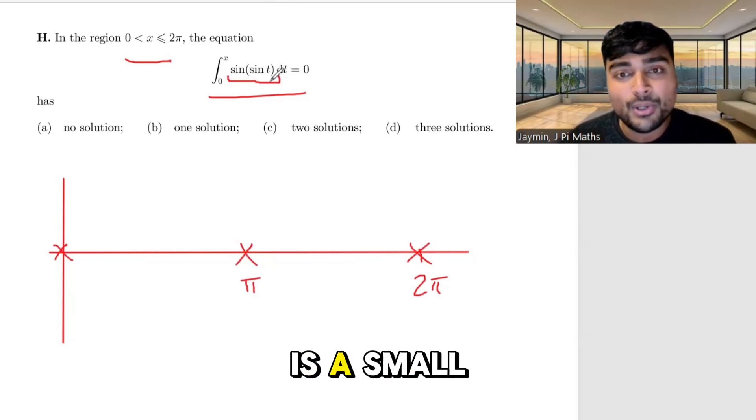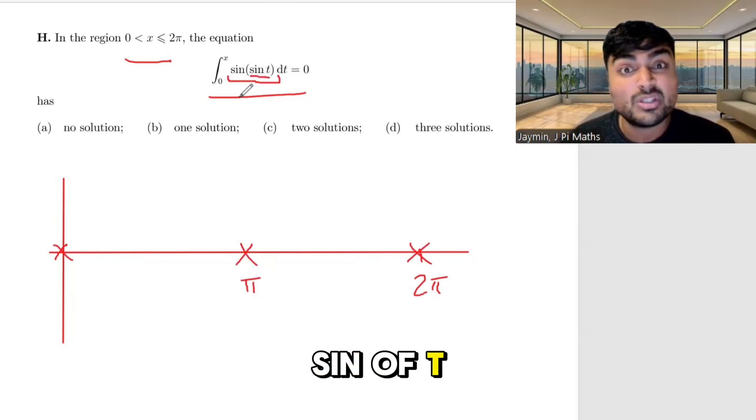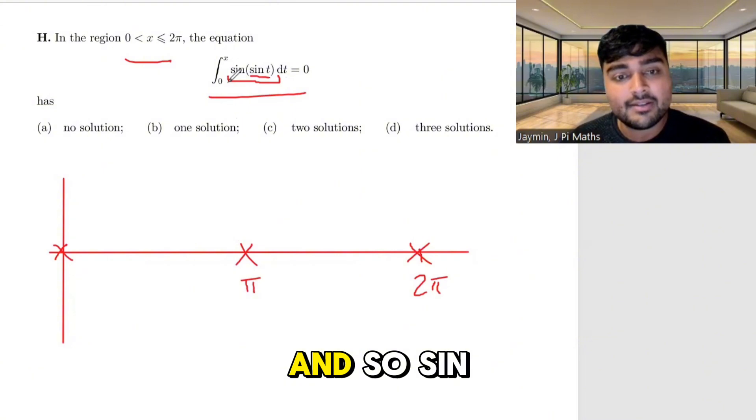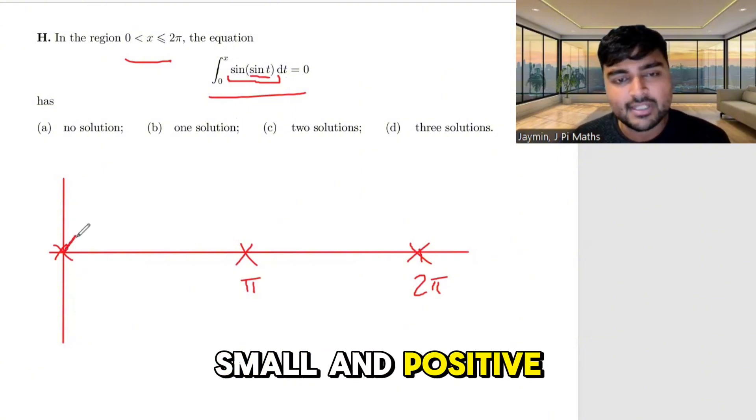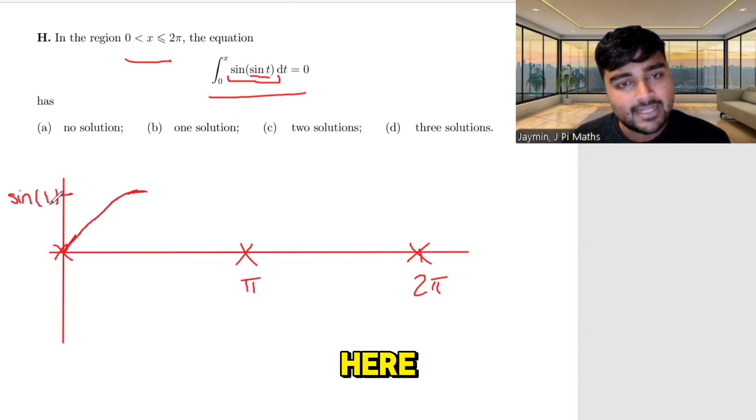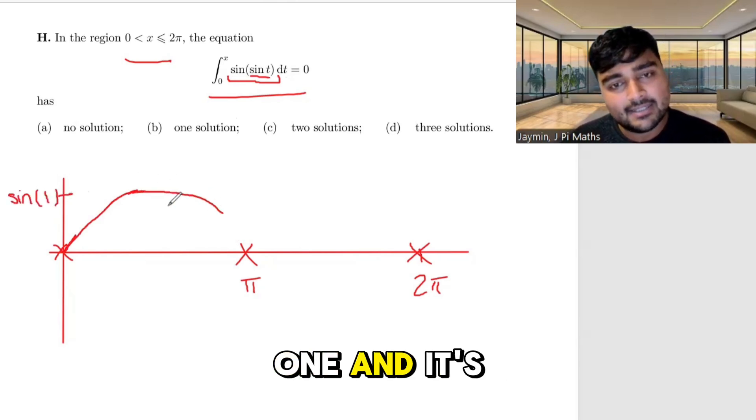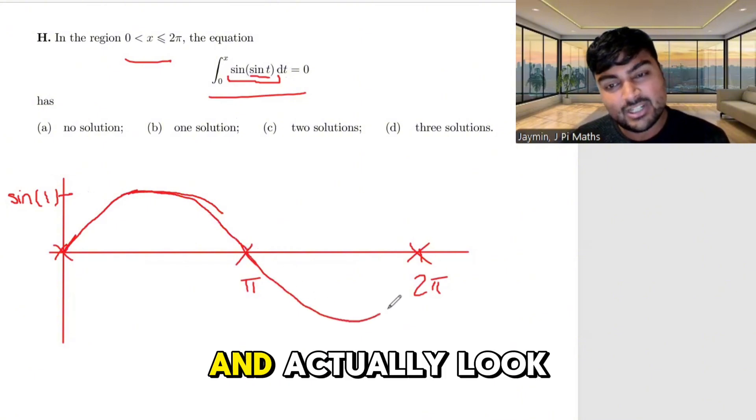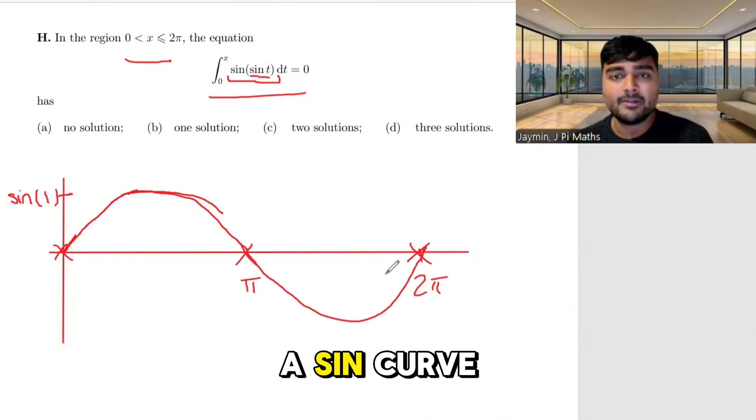Now, when t is a small positive number, sine of t will also be small and positive, and so sine of sine of t will be small and positive. So it's going to go up here. And in fact, it's not too difficult to convince yourself. It's going to have a maximum over here, that's sine of 1, and it's going to dip down like this through pi and actually look very similar to a sine curve.